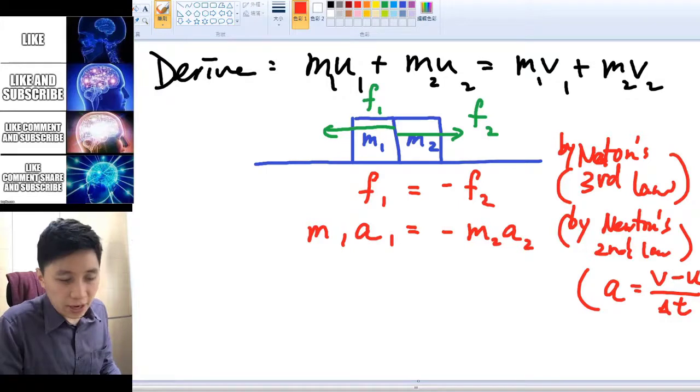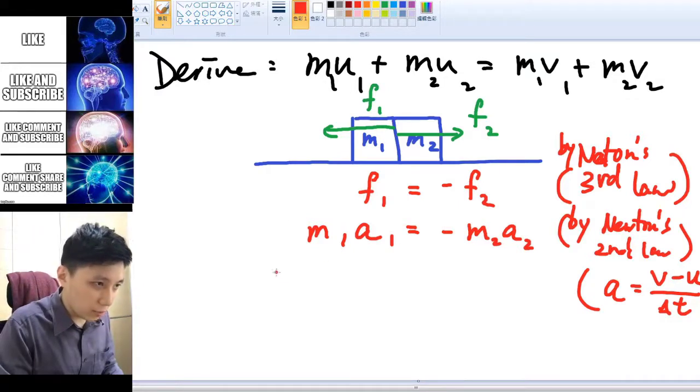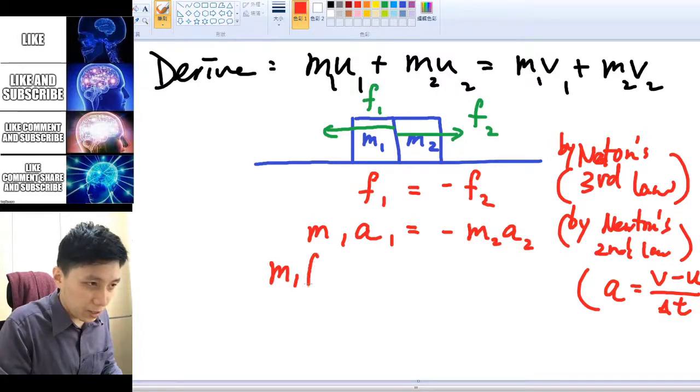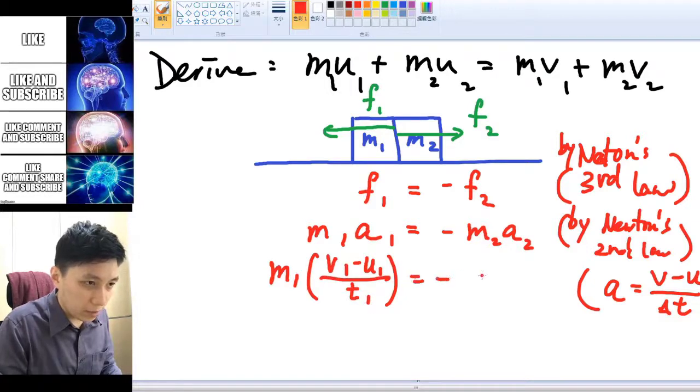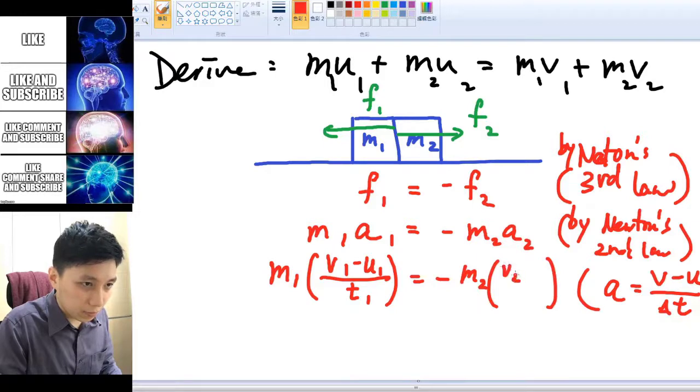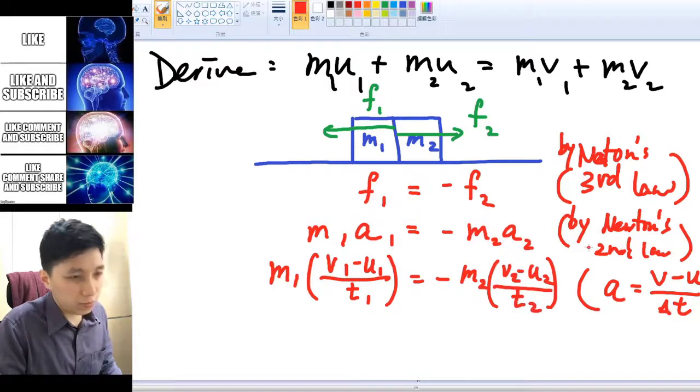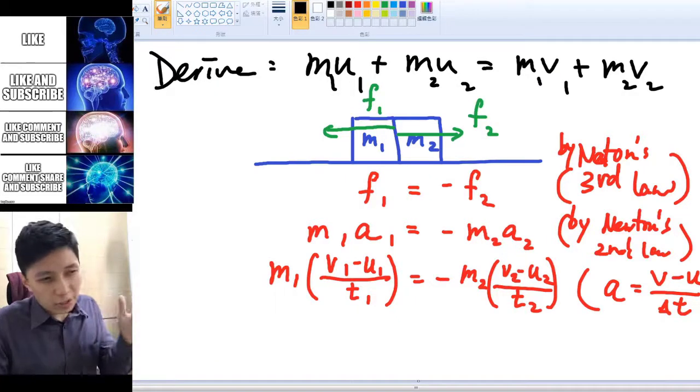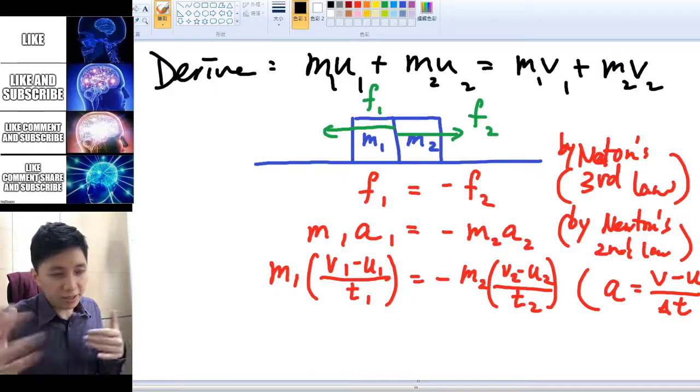And then v and u, you know, is final and initial velocity. So in this case we will change it to keep the m, and then we will have v₁ minus u₁ over t₁. Similarly on the right hand side, v₂ minus u₂ over t₂. And you may think, oh it looks complicated and seems like deviating from what we are trying to derive, but not really.